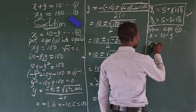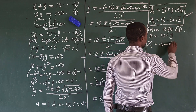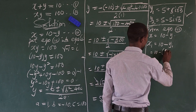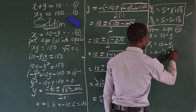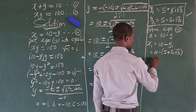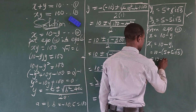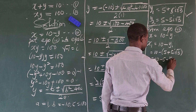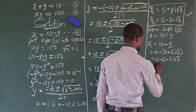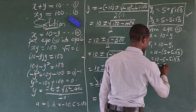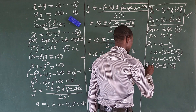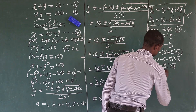Case one: x1 equals 10 minus y1, which gives us 10 minus bracket 5 plus 5 iota root 3. Using the minus sign to open the bracket, this becomes 10 minus 5 minus 5 iota root 3, which gives us x1 equals 5 minus 5 iota root 3.